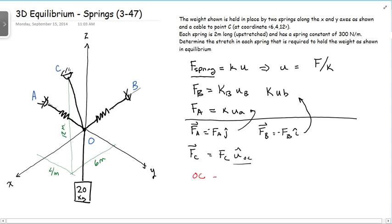So OC will be 4I plus 6J plus 12K. OK. So the unit, so that's its vector. The magnitude of OC is going to be the square root of 4 squared plus 6 squared plus 12 squared. And that turns out to be 14.